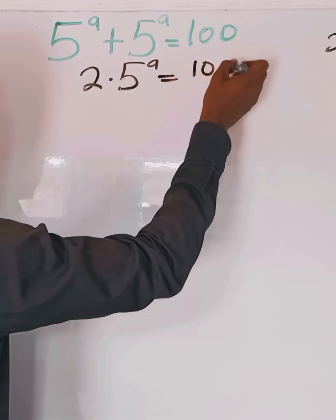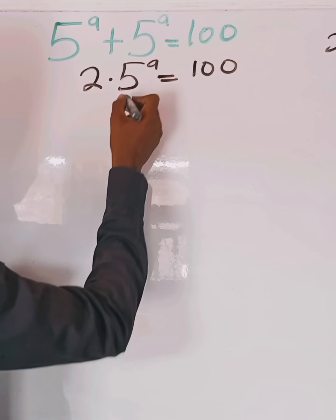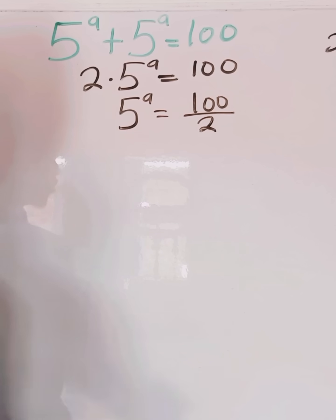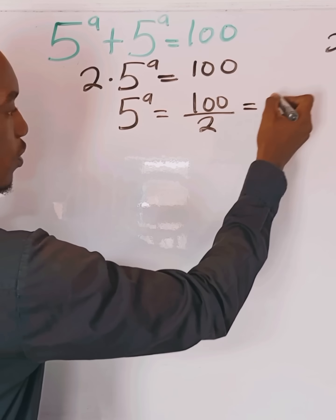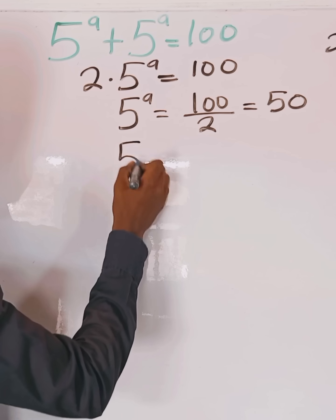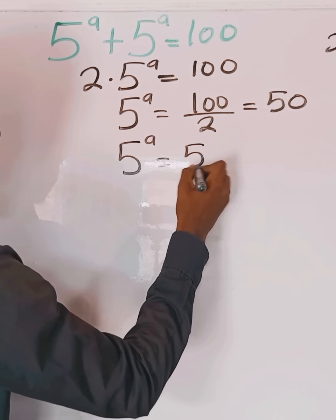This equals 100. Then we divide both sides by 2. We have 5 to the power of a will give us 100 divided by 2, which gives us 50. So therefore, 5 to the power of a equals 50.